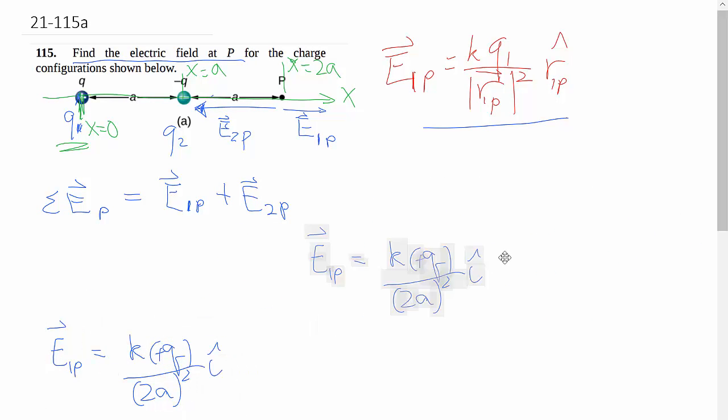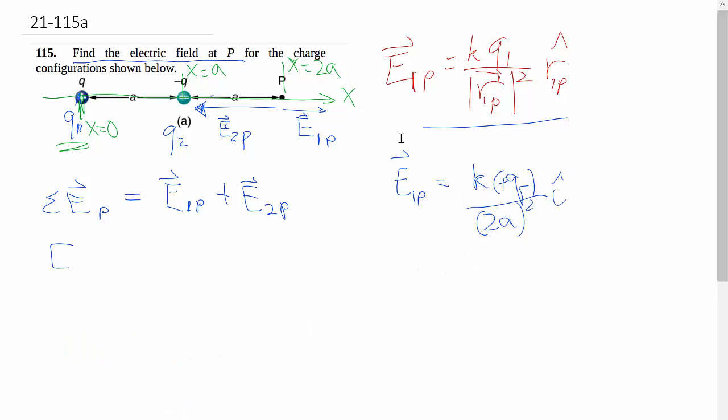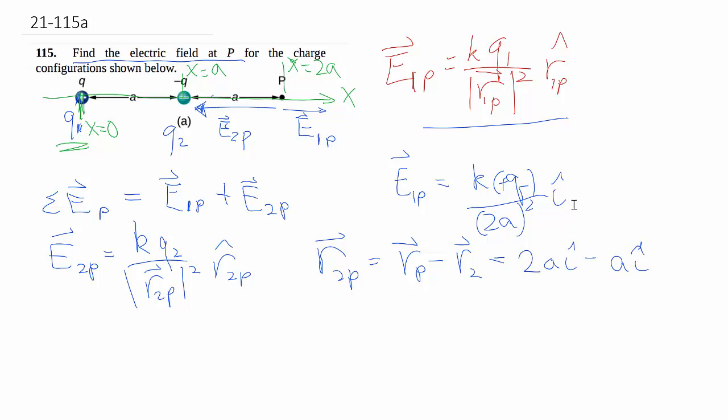We'll keep this around while we move on to our other term, which is E2P. Again here, the key to this whole thing is defining the displacement vector from the source to the point, because that will give us both the magnitude down here as well as the unit vector defining the direction. So R2P is equal to, again, final minus original, so we take the positional vector of the point minus the position vector of q2, giving us 2a in the i hat direction minus a in the i hat direction, because that's where charge 2 is at x equals a.